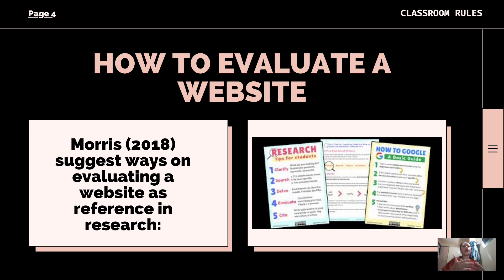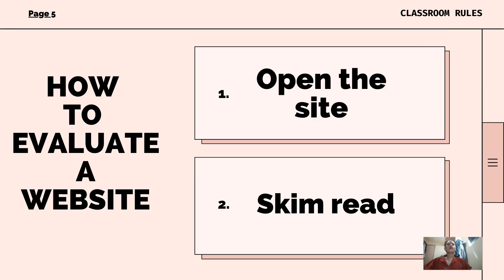Now let's proceed to our second topic which is all about how to evaluate a website. Morris (2018) suggests ways on evaluating a website as a reference in research. The first thing is to open the site. When looking through Google search results, you may want to teach students to open sites in a new tab, leaving their search results in a tab for easy access later. The next step is to skim-read the site and determine whether you can read and understand the text. If it's too complicated or difficult to understand, find another website. Decide whether this is the sort of site that might provide you with the information you are looking for.